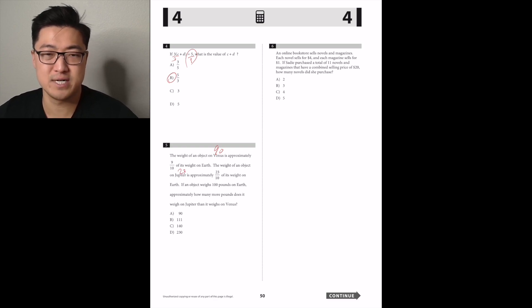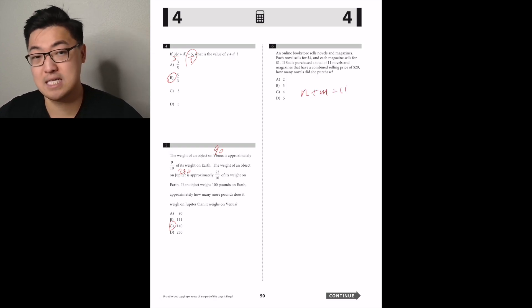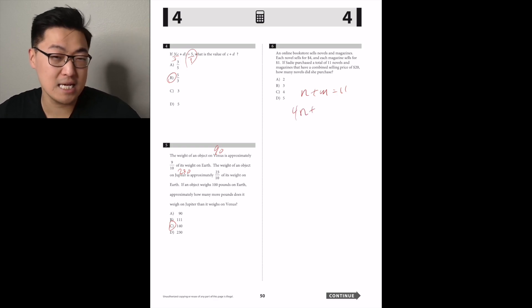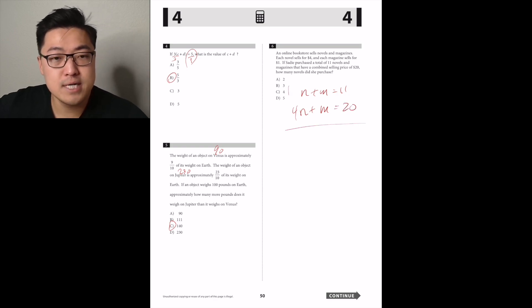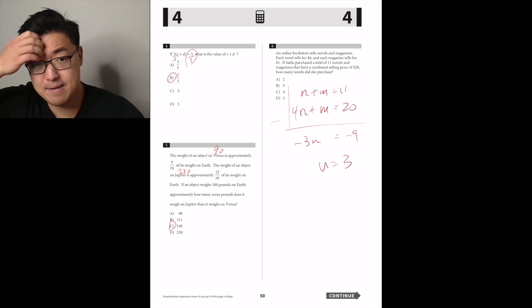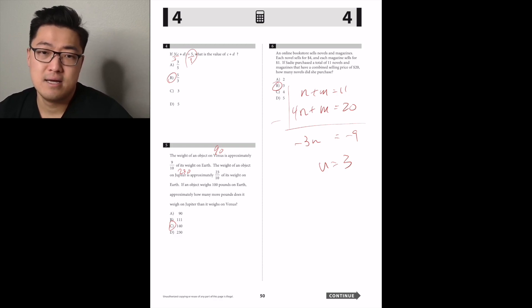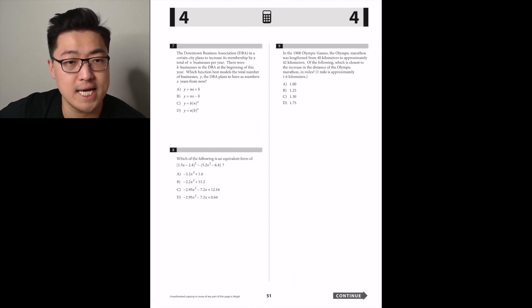An online bookstore sells novels and magazines. Each novel sells for four dollars, each magazine for one dollar. Stacy purchases a total of 11 novels and magazines with a combined selling price of 20. How many novels did she purchase? I'll brute force it: if there are three novels that's twelve dollars, then eight magazines for eight dollars — they add up to 20. It's B.